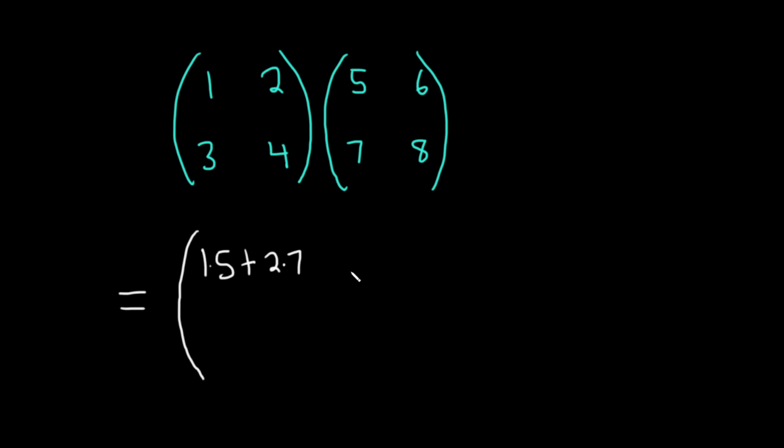Now here we're in the first row, second column, so we're going to use the first row, second column. So one times six plus two times eight. Let's just check that logic again. So this is the first row, first column. We use the first row, first column. Boom, there it is.